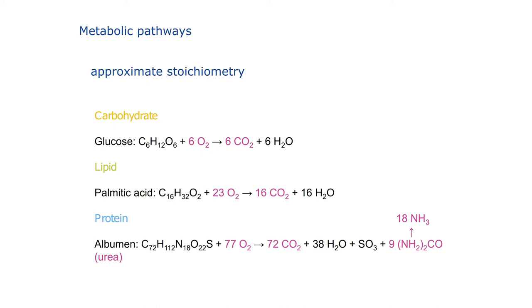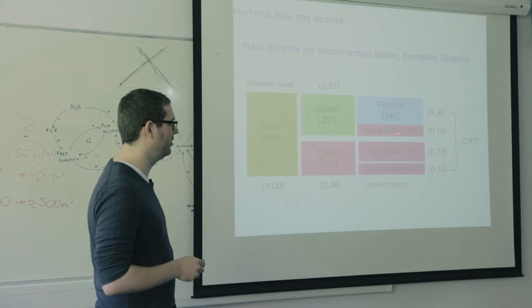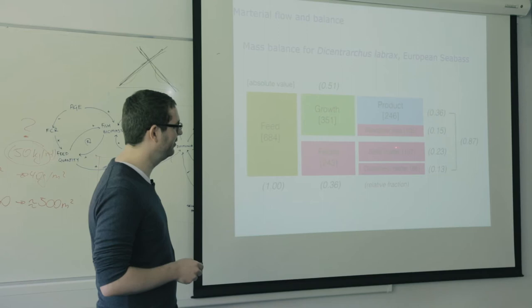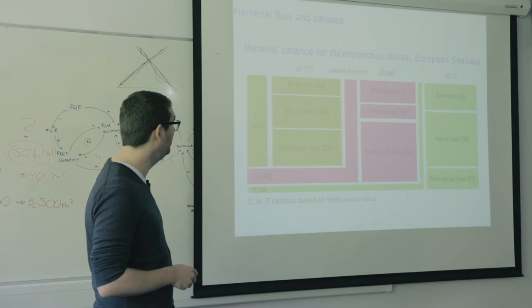Then we have the material flow, which we also want to balance — nothing is lost. So if we introduce feed into our system, our fish will grow from it. We will sell the fish and also have slaughter loss, which can be made into new feed. The feces can be used for biogas, and that's where the plants come into play.